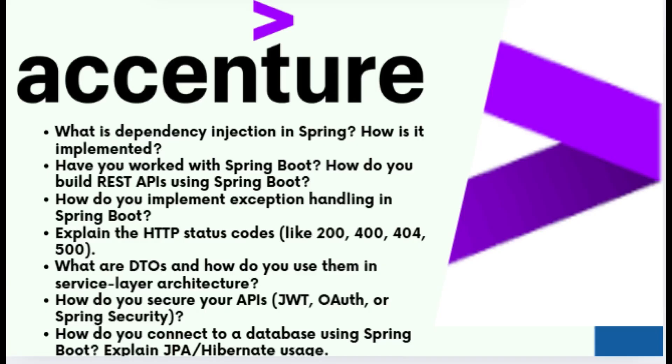In the next section they asked some Spring Boot related questions. The first was: what is dependency injection in Spring and how can you implement it? Dependency injection is a design pattern where the dependencies of a class are injected by the framework. In Spring, you can use annotations like @Autowired, and explain how @Autowired works, or use constructor injection or setter injection to inject dependencies, helping write loosely coupled code.